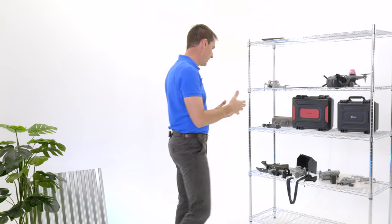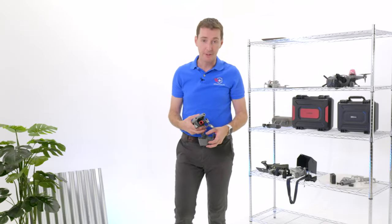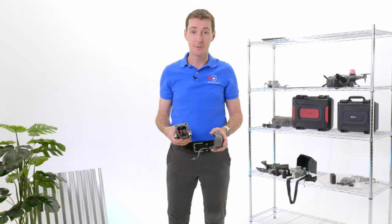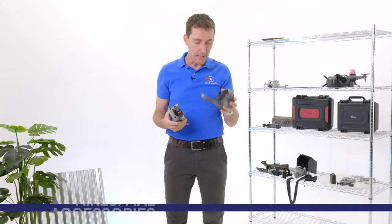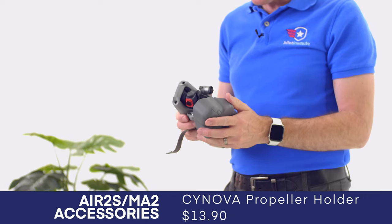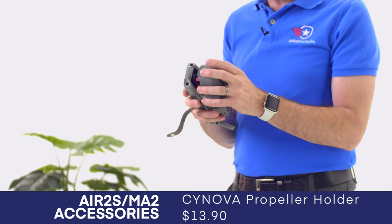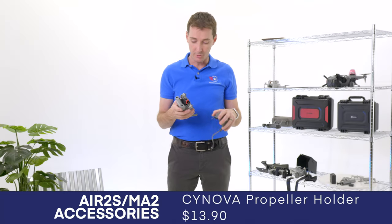The next set of equipment I want to talk about is for the Air 2 and the Air 2S. Let's talk about the propeller holder or the jock strap. If you are familiar with the Mavic 3, the Mavic 3 came with this jock strap that goes around the gimbal.